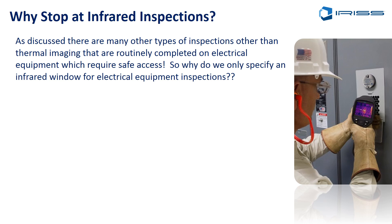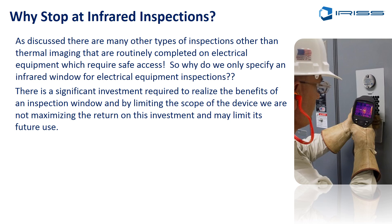But why stop at infrared inspections? As we've seen with CAST, there are many types of equipment used for inspections on electrical distribution assets. So why specify only an infrared window when we're doing much more? The significant investment required to realize the benefits of an inspection window means that by limiting the scope of the device, you're not going to maximize the return on investment. This may also limit its future use — you want to think not just about what you're doing today, but what you might be doing in five years' time.